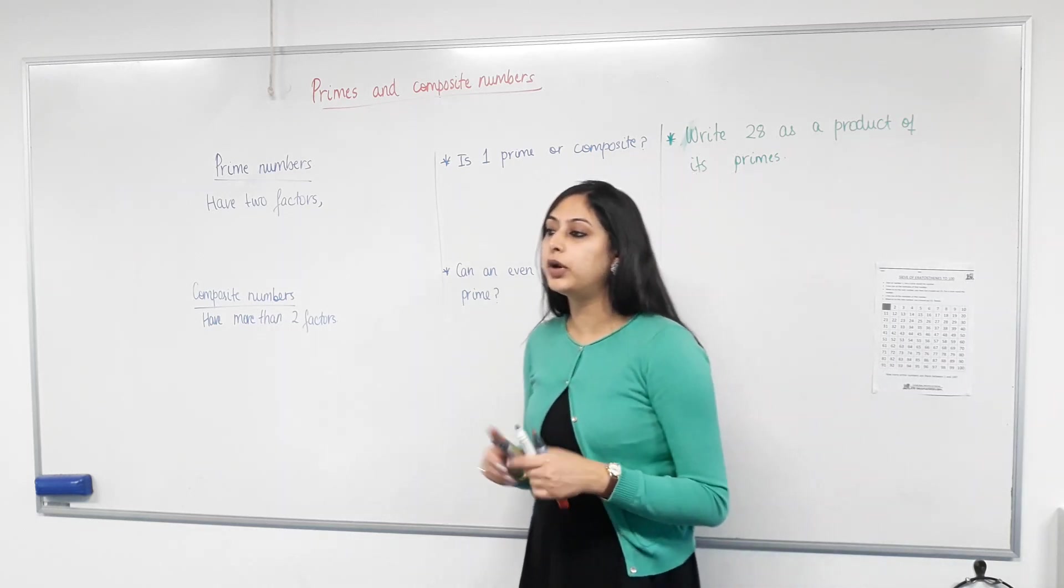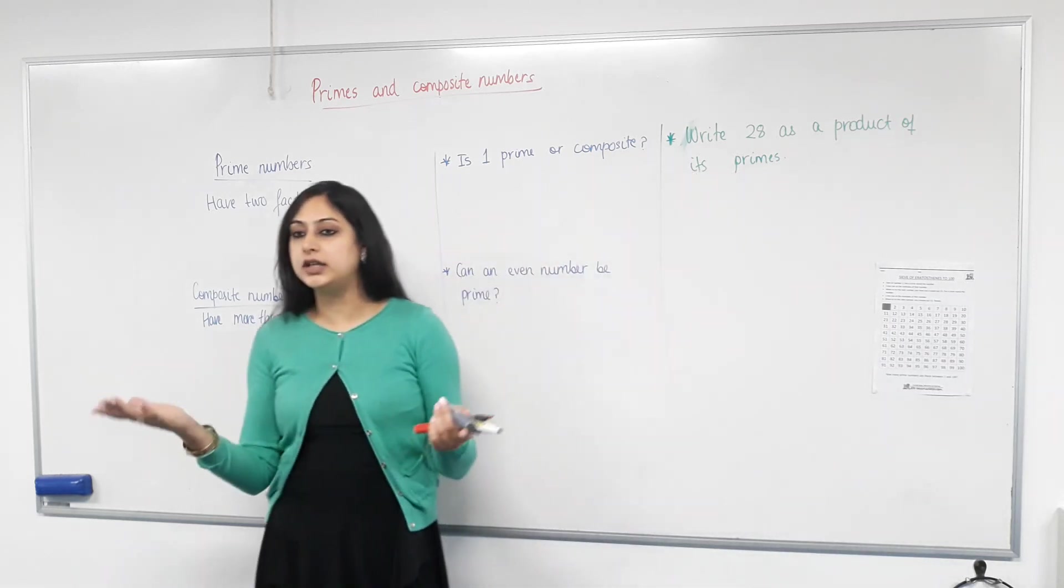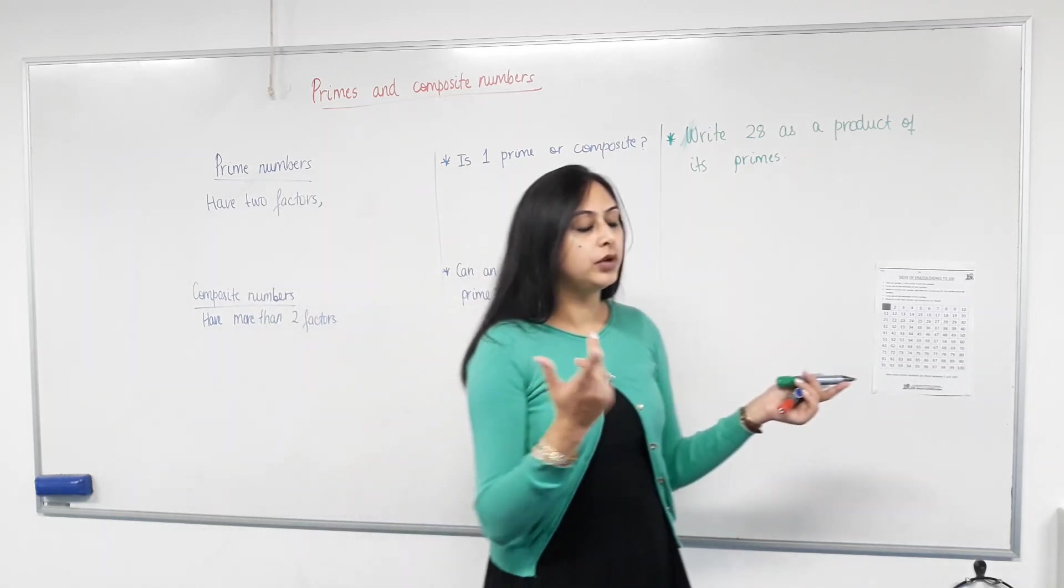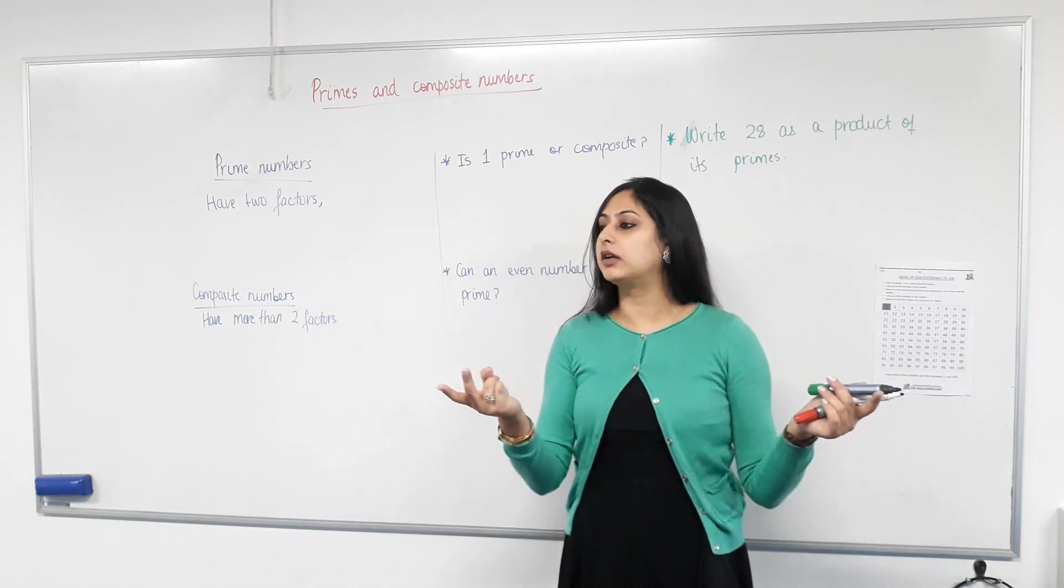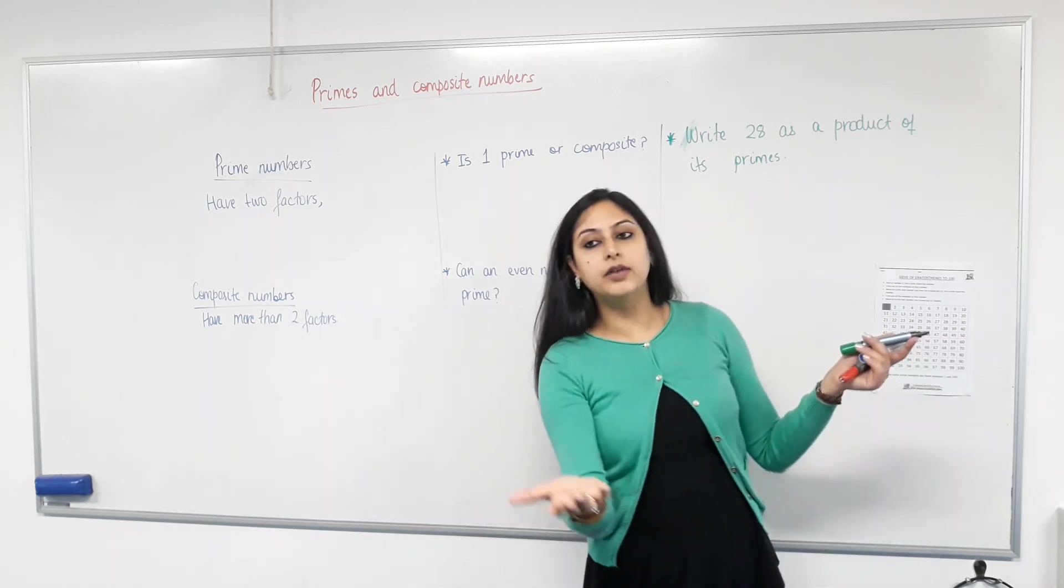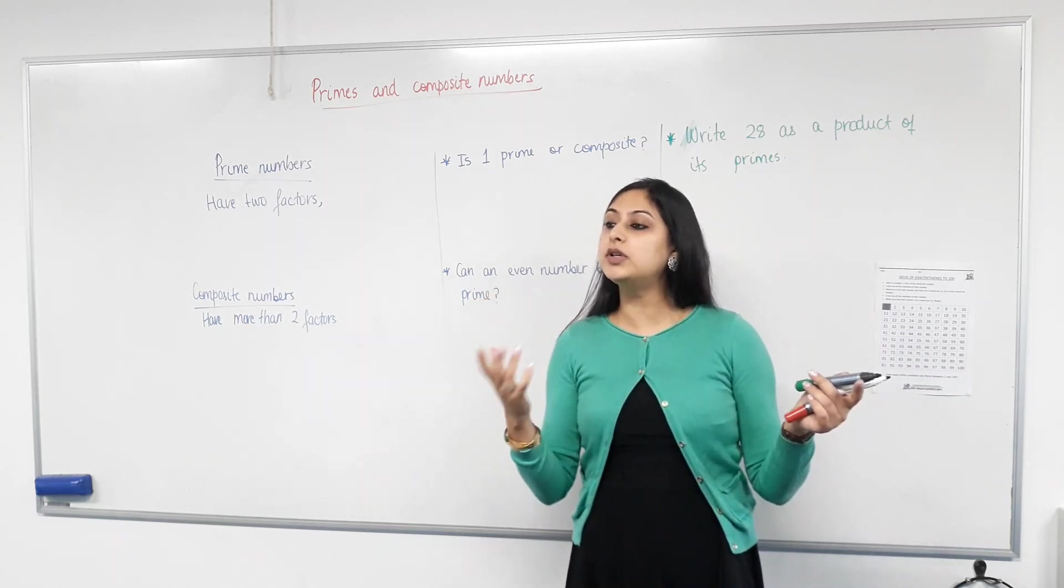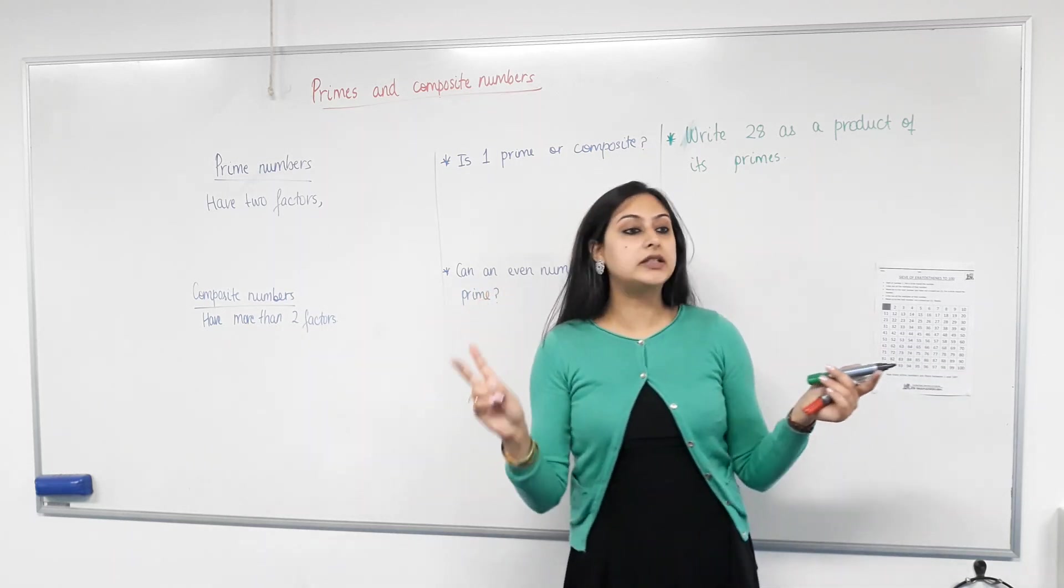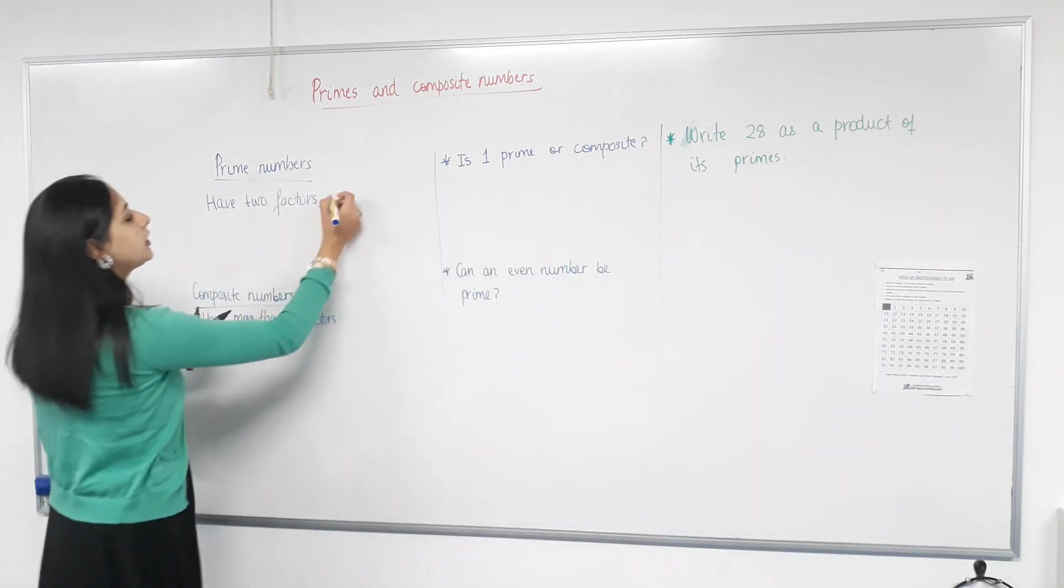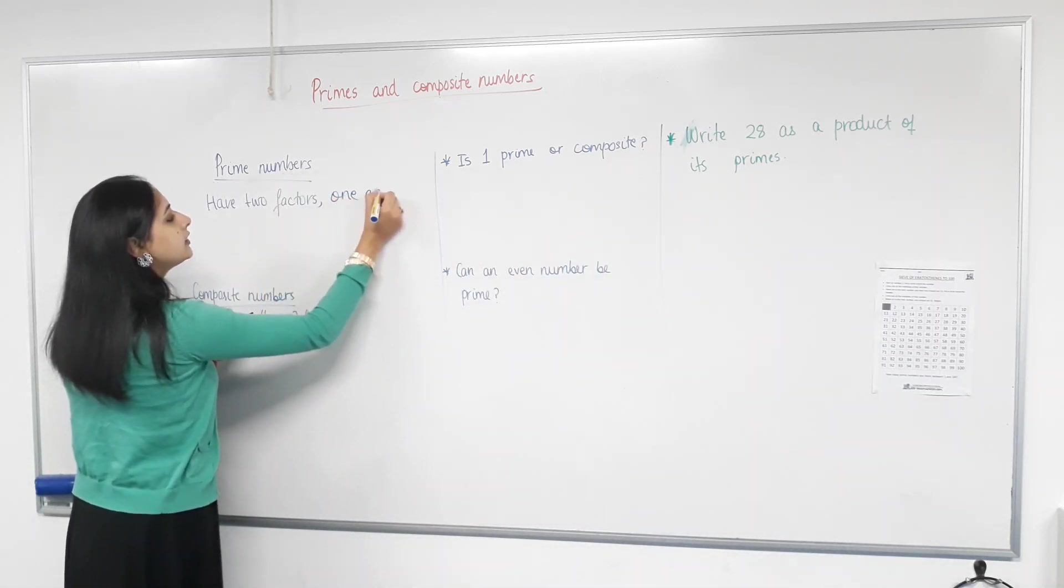Let's think about number two. What are the different ways you can write two? One times two and two times one. Is that it? Yep. How many factors does two have? Two. One and two itself. How many factors does five have? One and five. How many is it? Two factors. So, prime numbers only have two factors. One and itself.